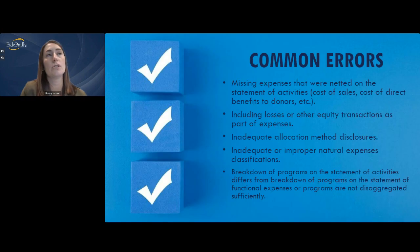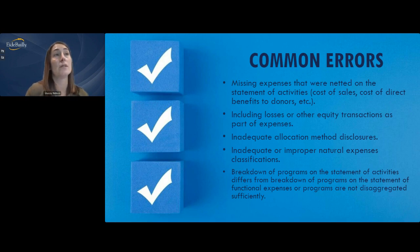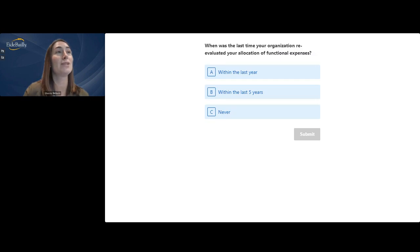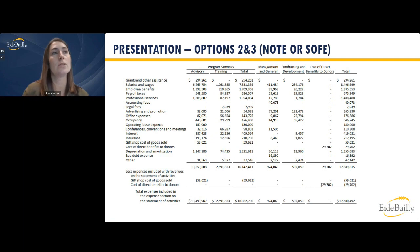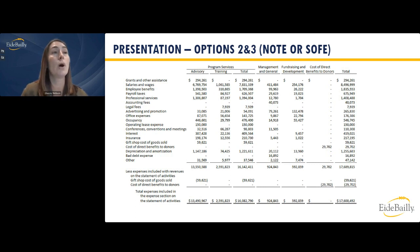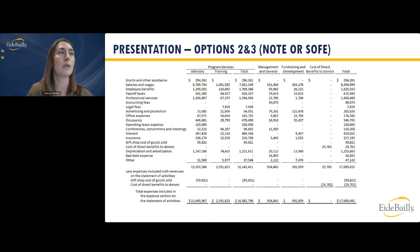Common errors in the statement of functional expenses: missing expenses that were netted on the statement of activities. Direct costs of benefits to donors can be netted against special events on the statement of activities, but they are still expenses to the organization and should be included in the statement of functional expenses. Present them in a separate column for cost of direct benefits to donors, then back them out to reconcile to the expense section of the statement of activities. Similarly, cost of goods sold — for instance, from a gift shop — would be handled the same way.